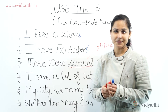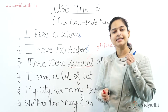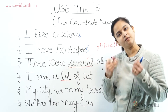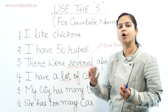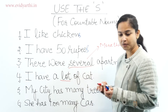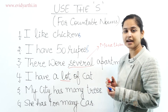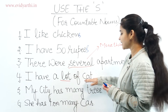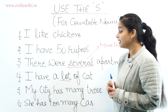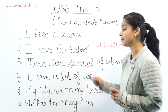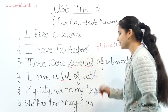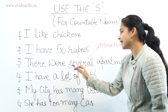'I have a lot of cap' — क्या यह sentence सही है? नहीं, यह sentence गलत है। 'Lot of' का मतलब है more than one, और cat एक countable noun है। इसलिए सही होगा 'I have a lot of cats' — अब यह बिलकुल correct है।